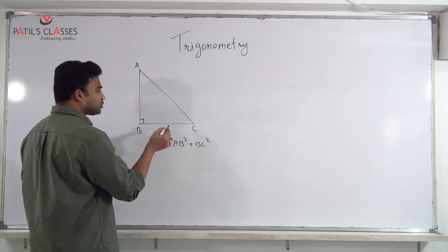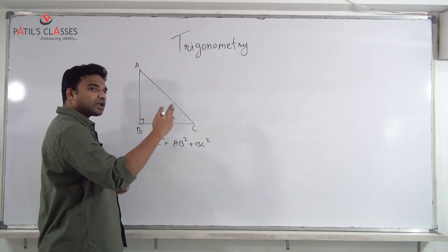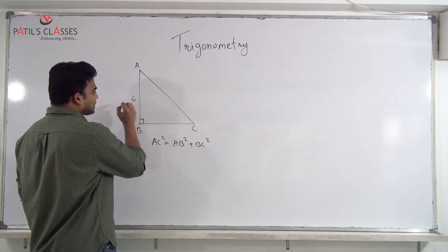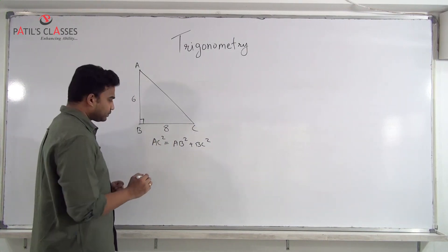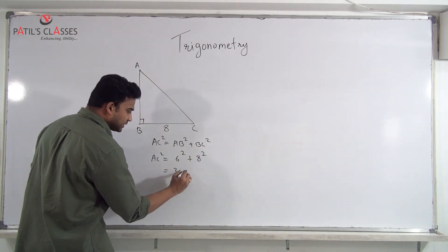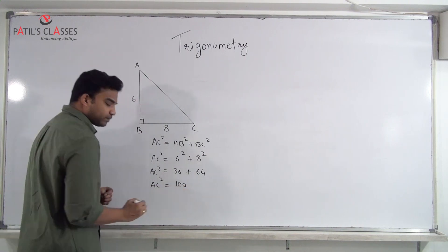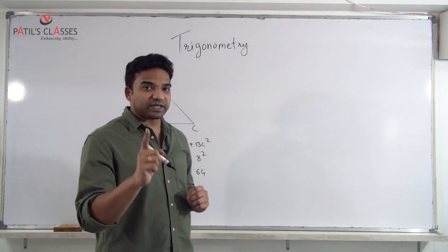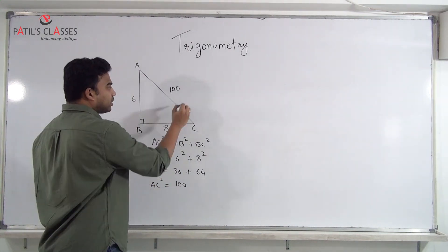This will be used when two sides are known and one side is unknown. For example, if we know one side is 6 and another is 8 and want the third side, we use Pythagoras theorem. So AC² = 6² + 8² = 36 + 64 = 100. A very common mistake students make is writing AC = 100, which is wrong.